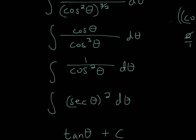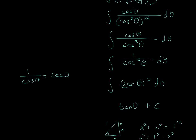Now, one of the cosines can cancel, so it'll be 1 over cosine squared theta. Now, 1 over cosine is the same as secant theta. So that'll become secant theta squared d theta. And then when I take the integral of secant squared theta, that's the same as tangent. And then don't forget the plus c.